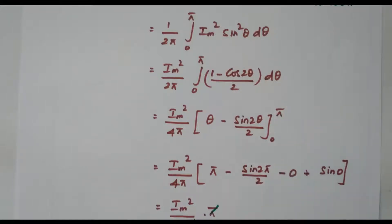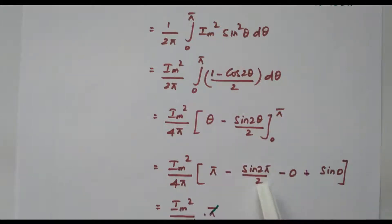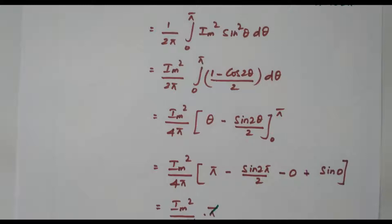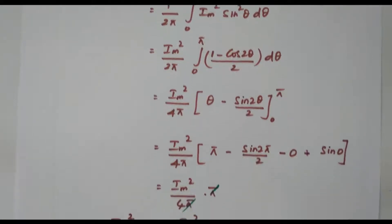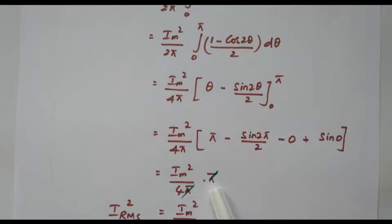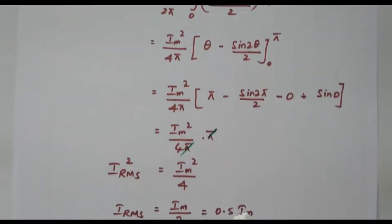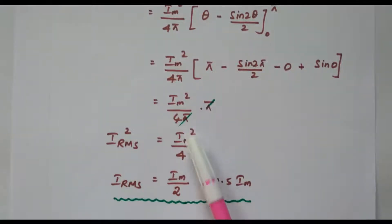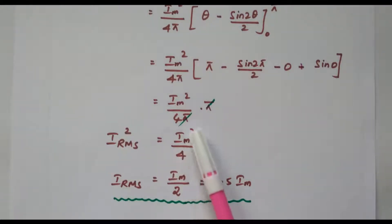Now we substitute the limits 0 to π. We get Im²/4π: substituting the upper limit π gives π − sin(2π)/2, and substituting the lower limit 0 gives sin(0). Since sin(2π) = 0 and sin(0) = 0, only π remains. So Im²/4π × π — the π cancels — giving IRMS² = Im²/4.